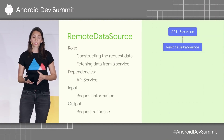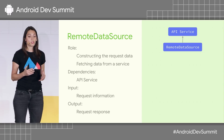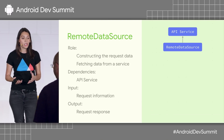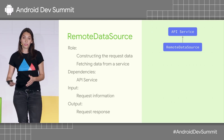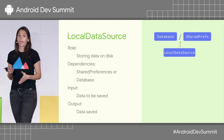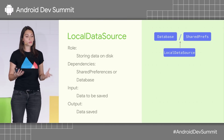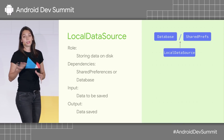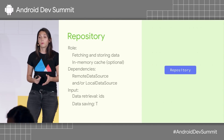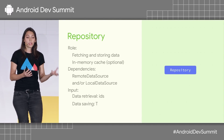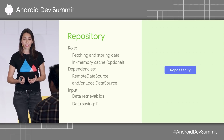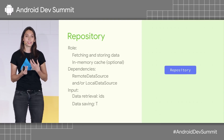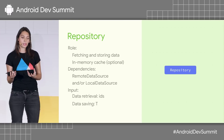We defined a remote data source whose role is to just construct the request data, fetch the data from the API service, request the information, and return the response received. Next, we would have a local data source whose role is just to store data on disk — either in shared preferences or in the database. Next, we would have the repository whose role is to fetch and store data, and optionally do in-memory cache. The repository is the class that mediates between the local and the remote data source.